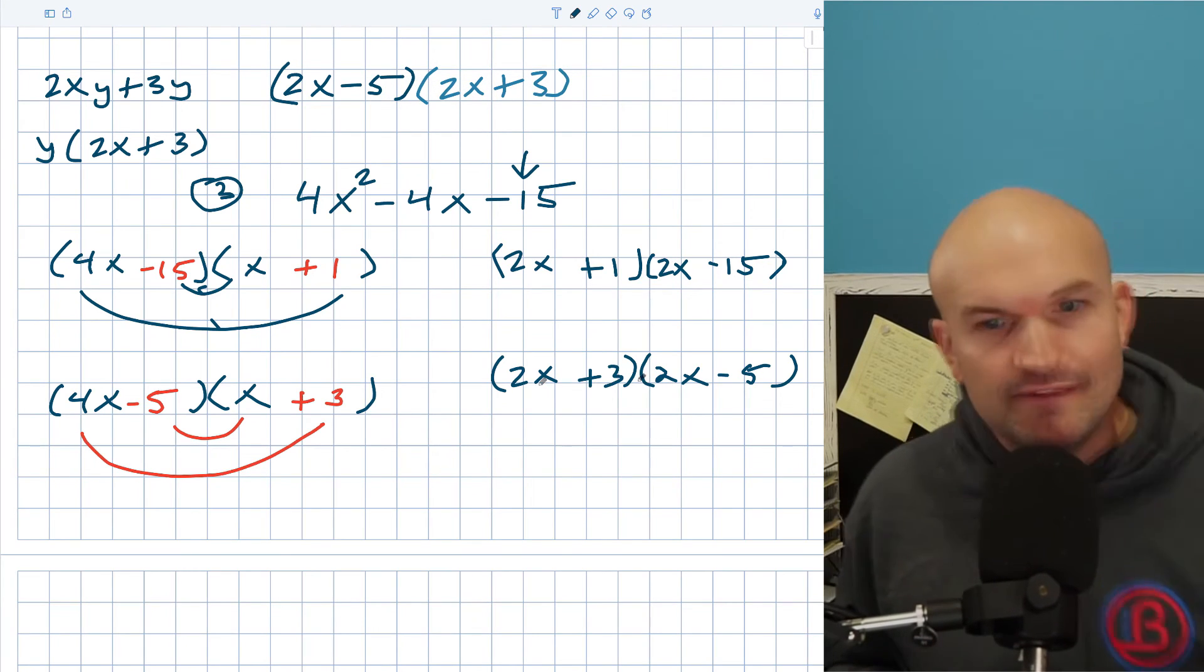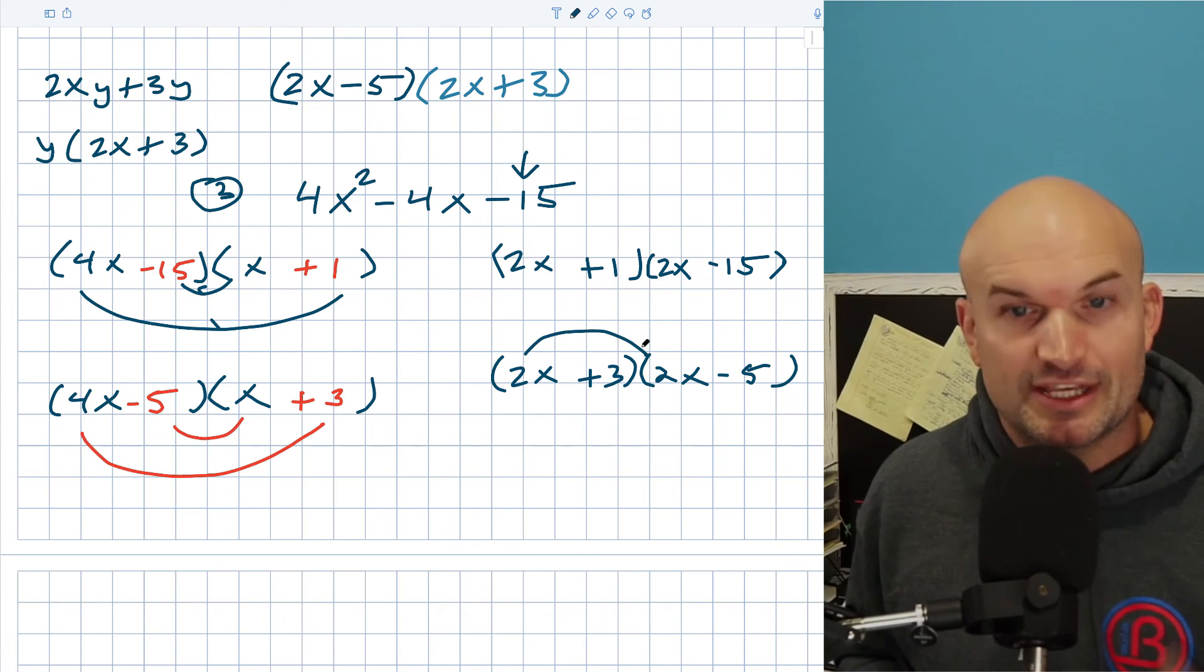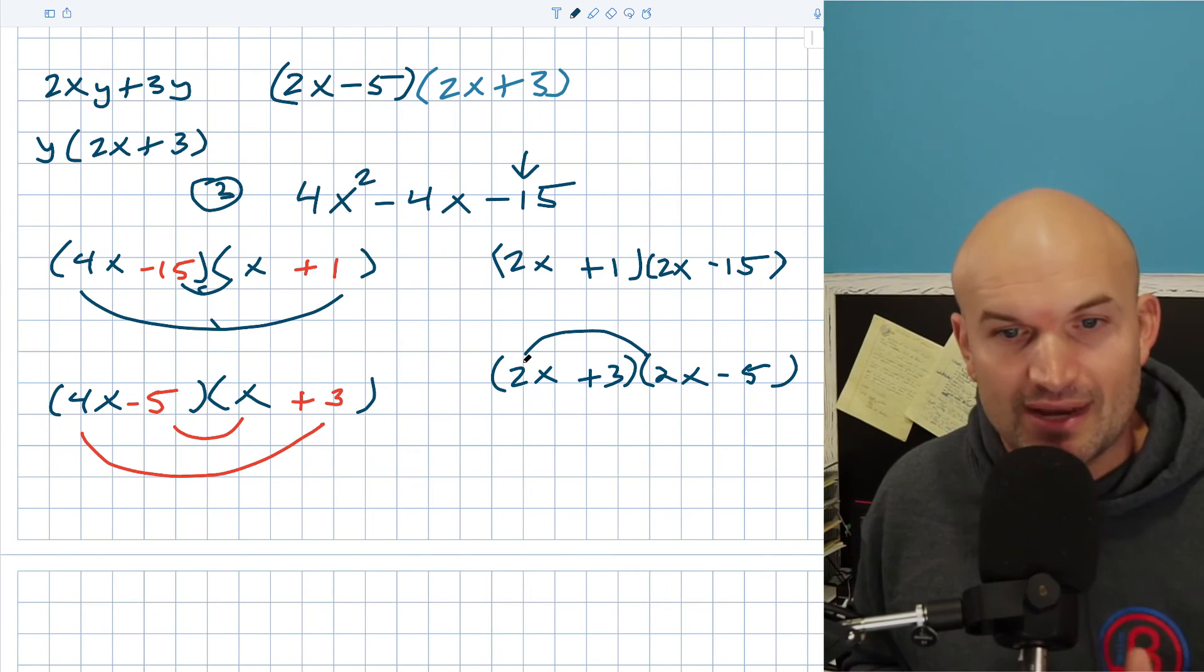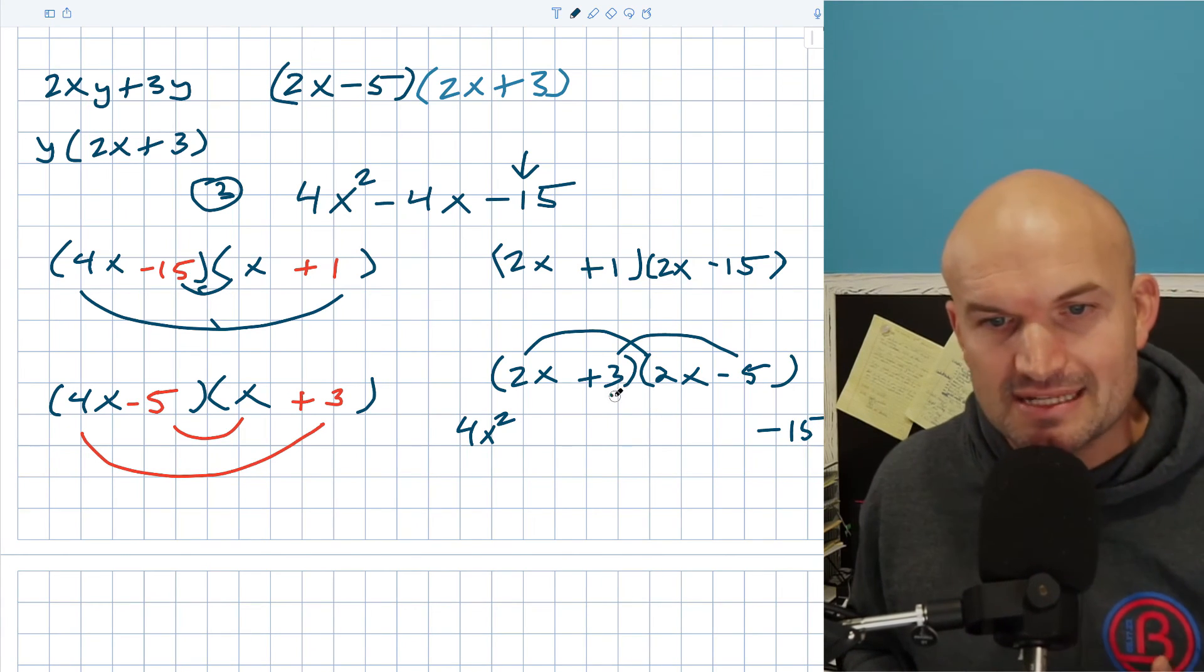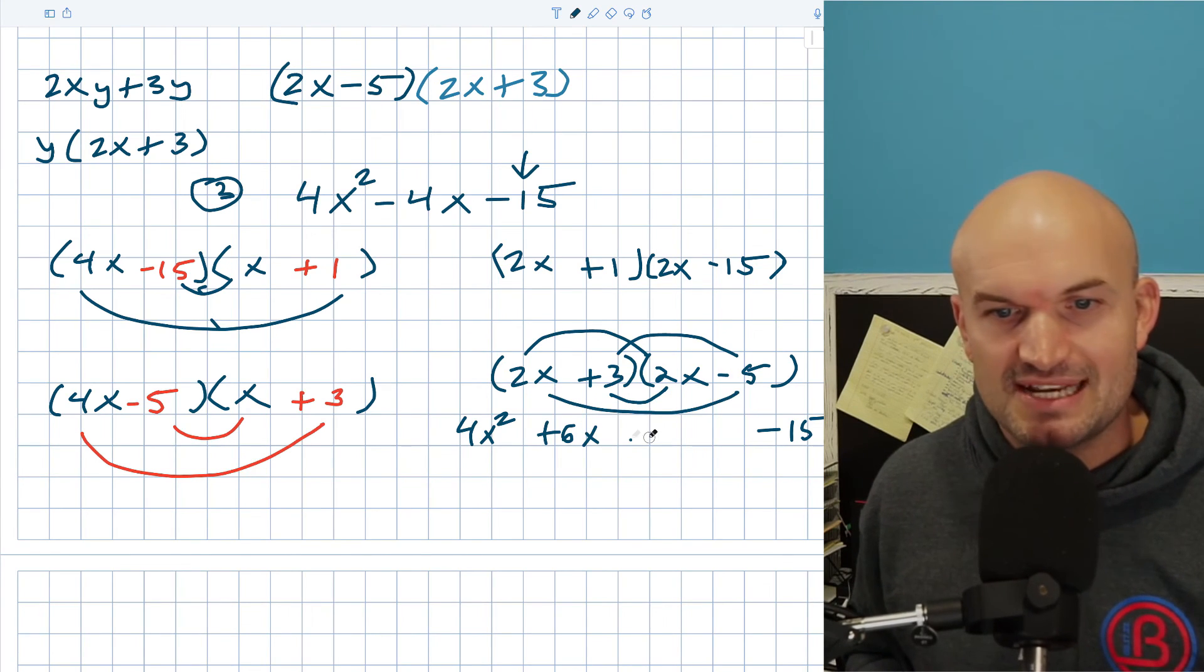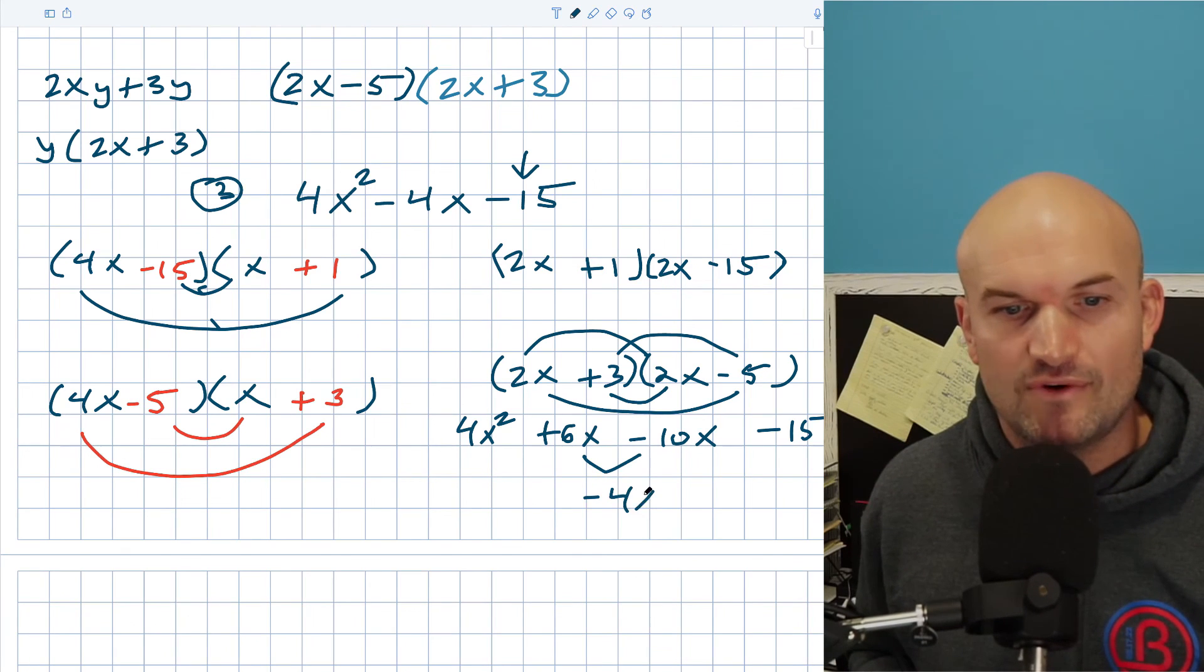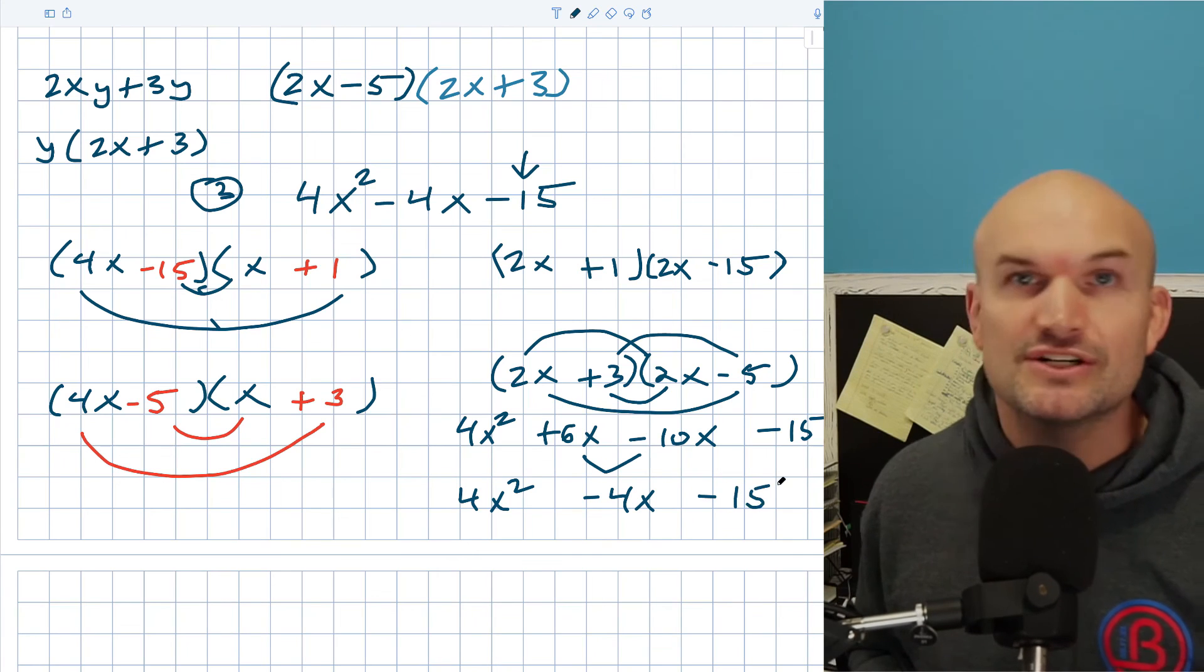Even with this guess and check, always go back and check your work. Two X times two X is going to be four X squared. Three times negative five is negative 15. What I was doing in my head was three times two X is positive six X. Two X times negative five is negative 10 X. These combined to give me negative four X. So the more practice that you guys get, the faster and easier it's going to become.